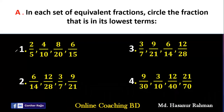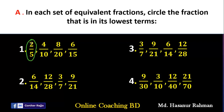So here we have 4 questions. If we look at number 1, here we can easily say 2/5, 4/10, 8/20 — these fractions are equivalent fractions. From these fractions, 1 is the lowest one. If we look at the numerator, then 2 is the lowest one from 2, 4, 8, 6. And 5 is the lowest denominator from 5, 10, 20, and 15. So we can say 2/5 will be the lowest term, and we will give a circle here.